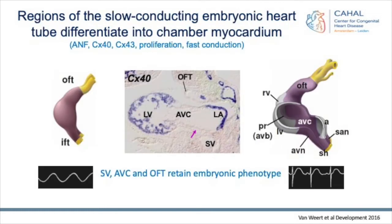This is work from Amsterdam. The primary heart tube is slow conducting, and eventually parts differentiate into chamber myocardium with connexin 40 and connexin 43, so fast conduction. As you can see here on the left, that's a chicken ECG from a long time ago, where you can see a sort of sinusoid movement of the ECG. But even without annulus fibrosis formation, just by this slow conducting AV canal, you get a sort of normal ECG even in a young heart.